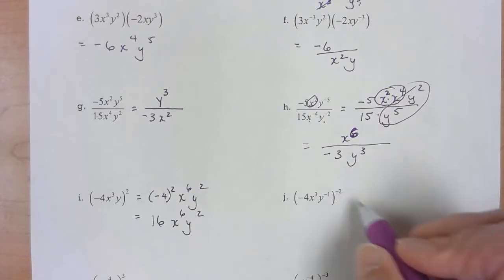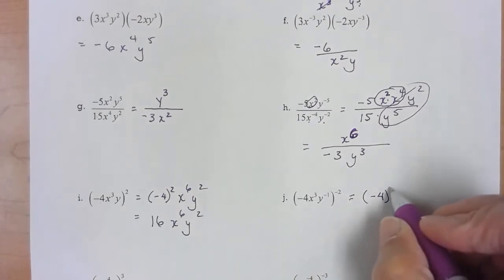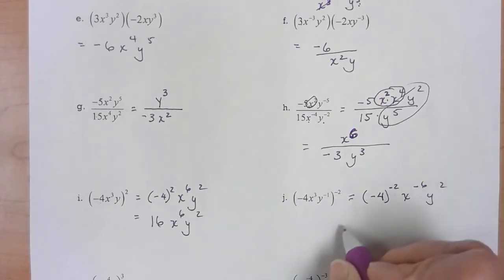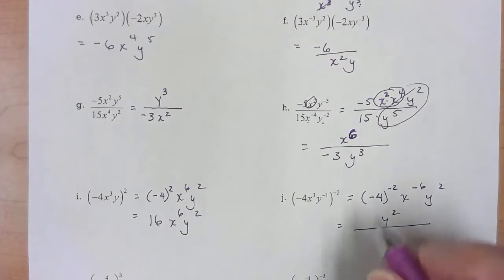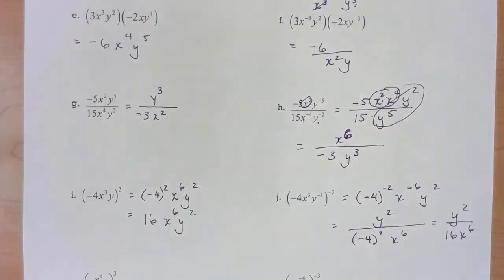And negative four squared will give me a positive 16 x to the sixth y squared. Negative exponent. Again I distribute that through, get rid of parentheses first. Only the things that have negative exponents are going to move. The y squared is fine in the numerator. So we're almost done. And here's that one.